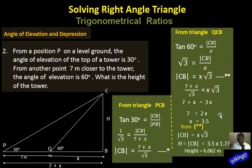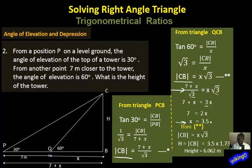Now we know X = 3.5. The height H = X√3 = 3.5 × √3 = 3.5 × 1.732, which gives a height of approximately 6.062 meters.